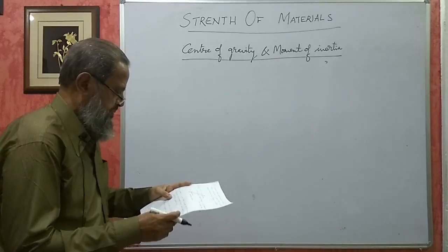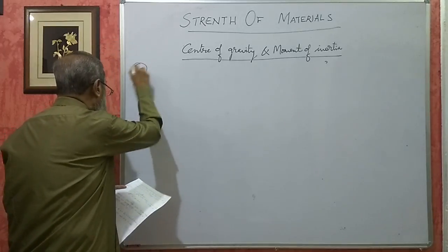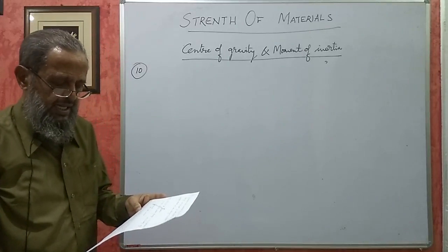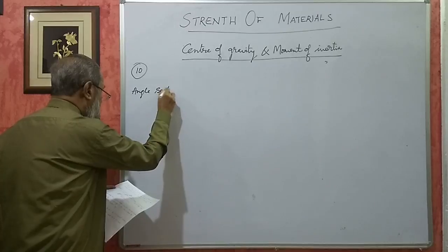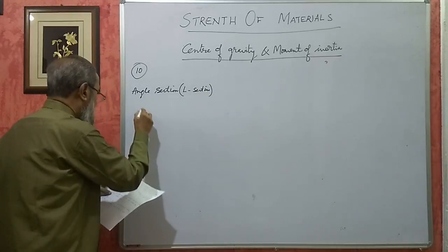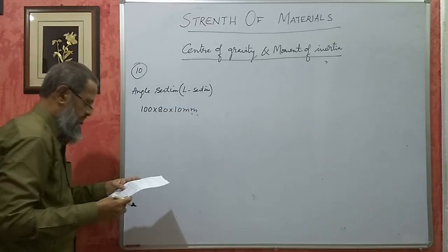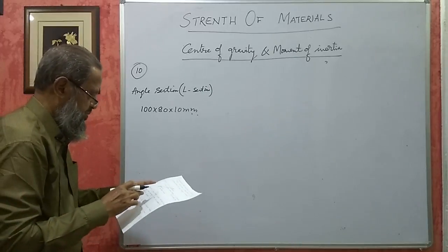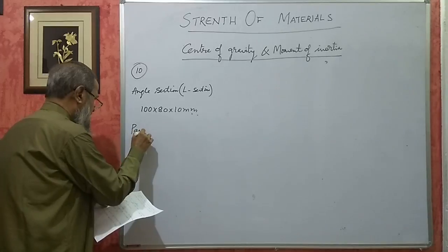In continuation of the previous clip, I am now taking the 10th problem from the question bank. It says: calculate the moment of inertia of an angle section, also called an L-section, 100 by 80 by 10 mm, passing through its centroid and parallel to the shorter leg.